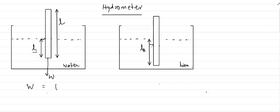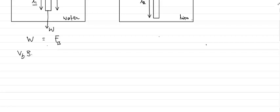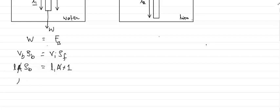Since the hydrometer is floating, we apply the equilibrium condition: weight equals upthrust, so V_B · ρ_B = V_I · ρ_F. The volume of the hydrometer is L × A, and the immersed volume is L1 × A. With ρ_F = 1 for water, A cancels out, giving L · ρ_B = L1, so the density of the hydrometer is ρ_B = L1/L.